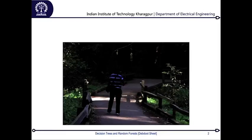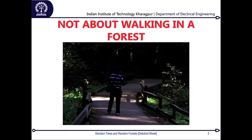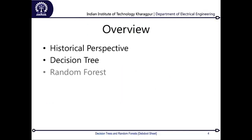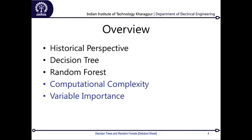So to start with, it is obviously not about jaywalking in a forest. It is actually about these kinds of structures — each of them is called a decision tree, and if you collate all of them together it is called a decision forest, from the fact that a lot of trees make up a forest. I will be speaking about the historical perspectives, how the whole field evolved into decision trees and then eventually to random forests.